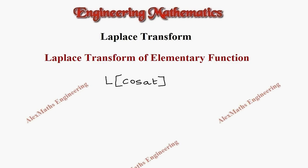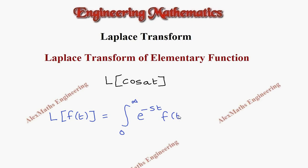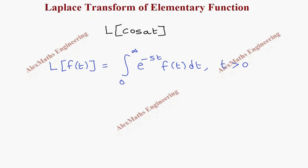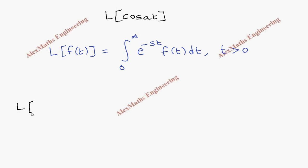Hi students, this is Alex here. In this video, we are going to find the Laplace transform of the elementary function cos(at). As per the formula, the Laplace transform of f(t) is given by the integral from 0 to infinity of e^(-st) times f(t) dt, where t is greater than 0. Now using this formula, we are going to find L of cos(at), which becomes the integral from 0 to infinity of e^(-st) times cos(at) dt.